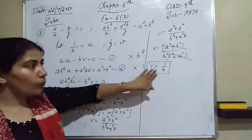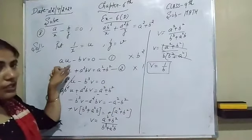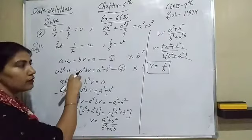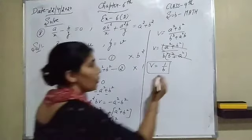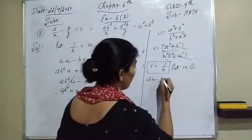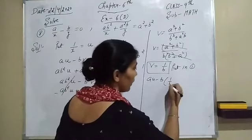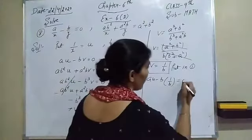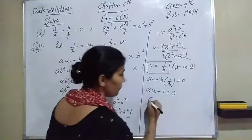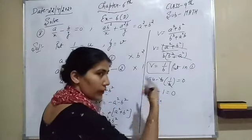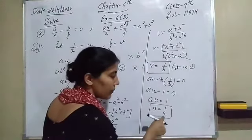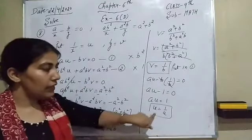After getting the value of v, we put it back into equation 1. You can also use equation 2 — it's up to you. I'll put it in equation 1: au minus b·(1/b) equals zero. The b's cancel, giving au minus 1 equals zero. Therefore au equals 1, and shifting to the right-hand side gives a positive 1.